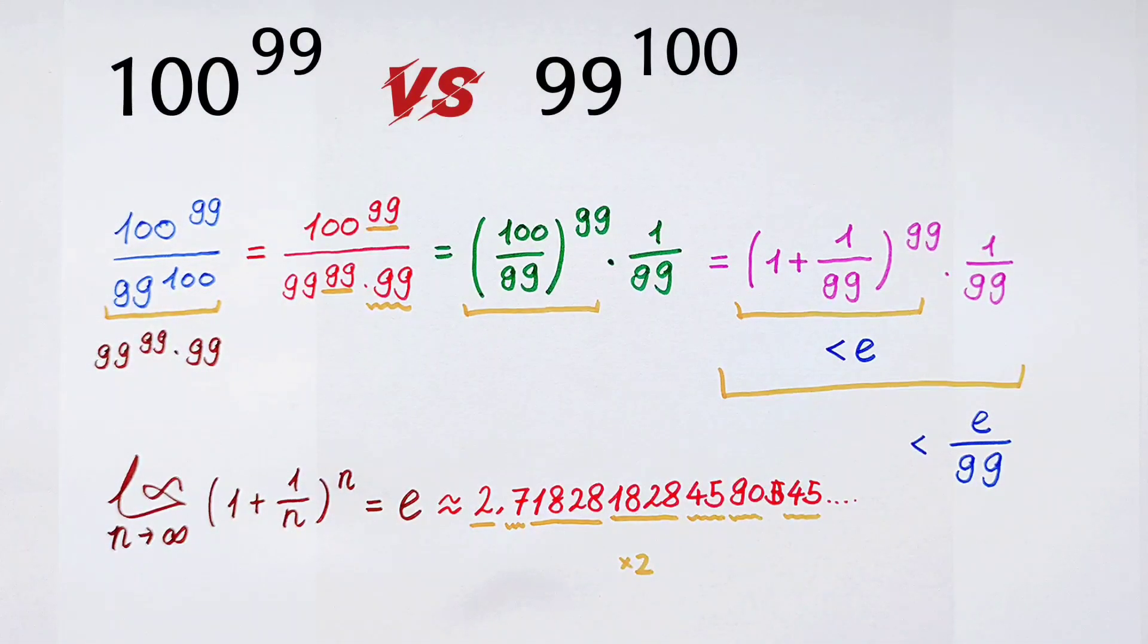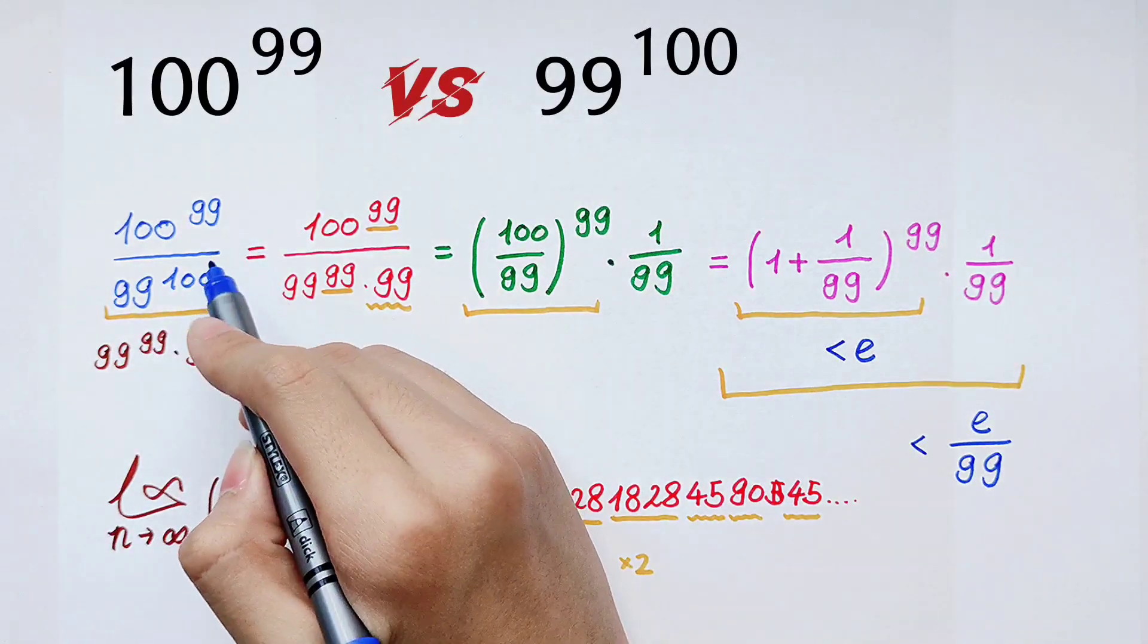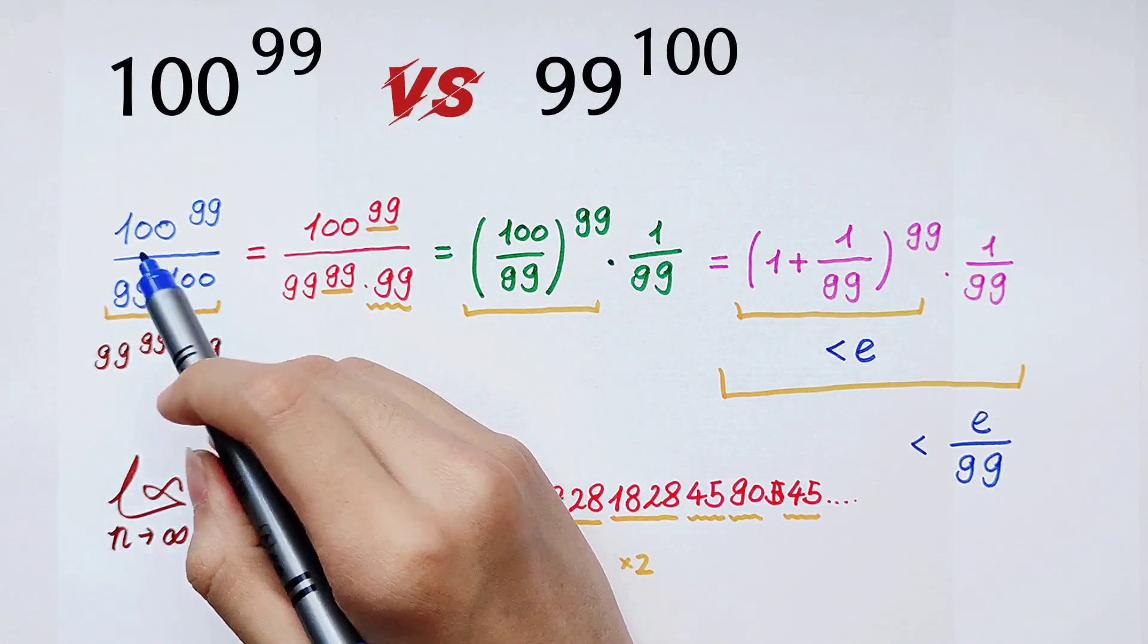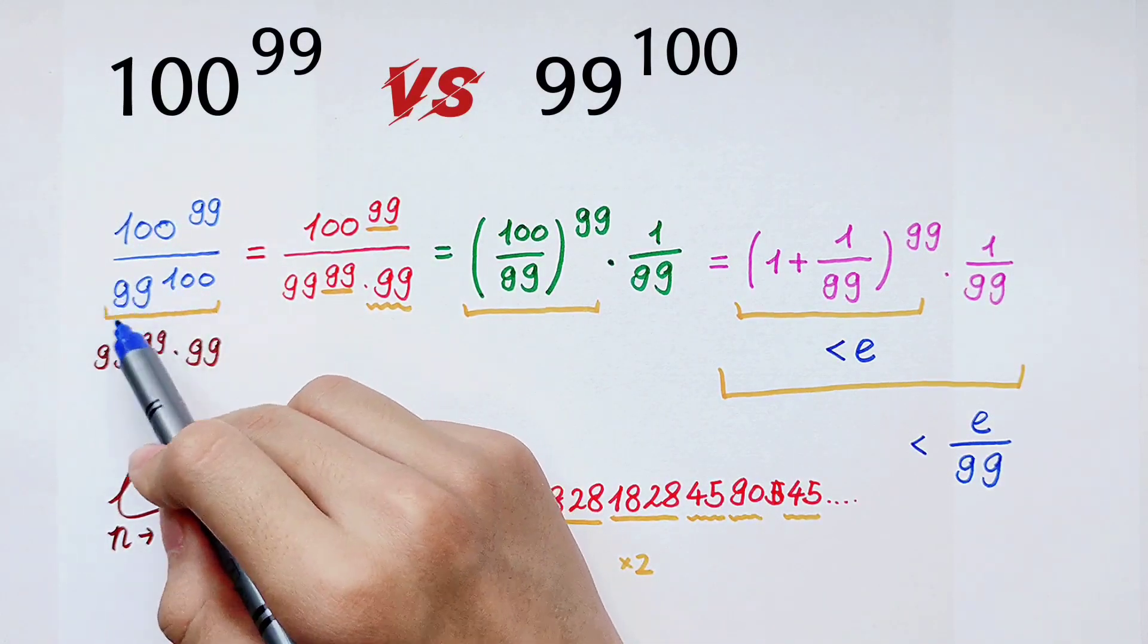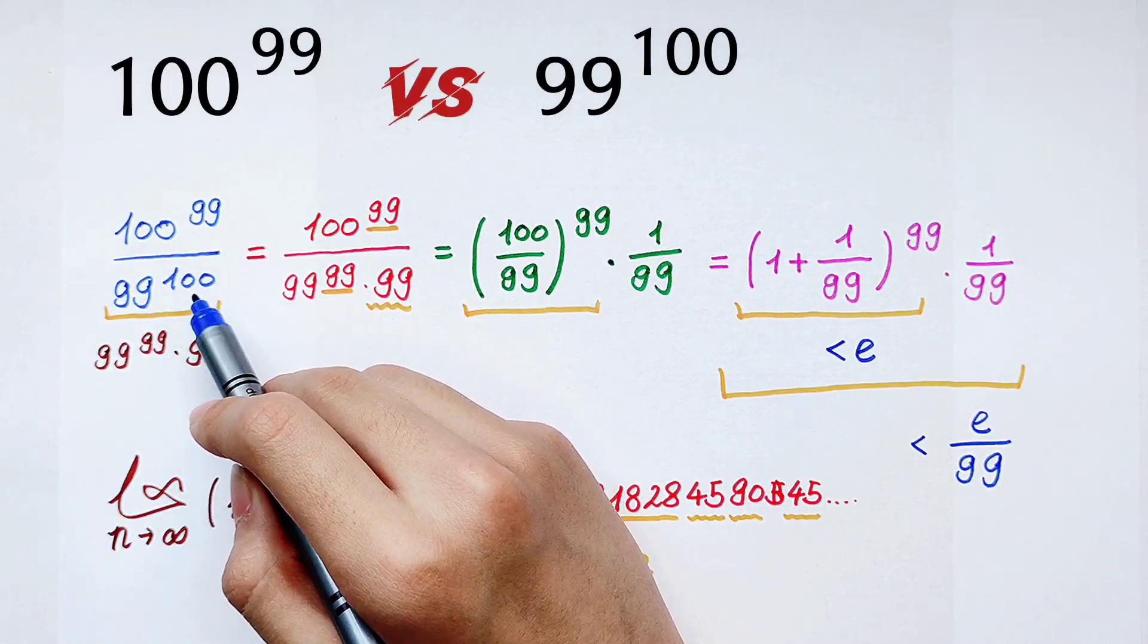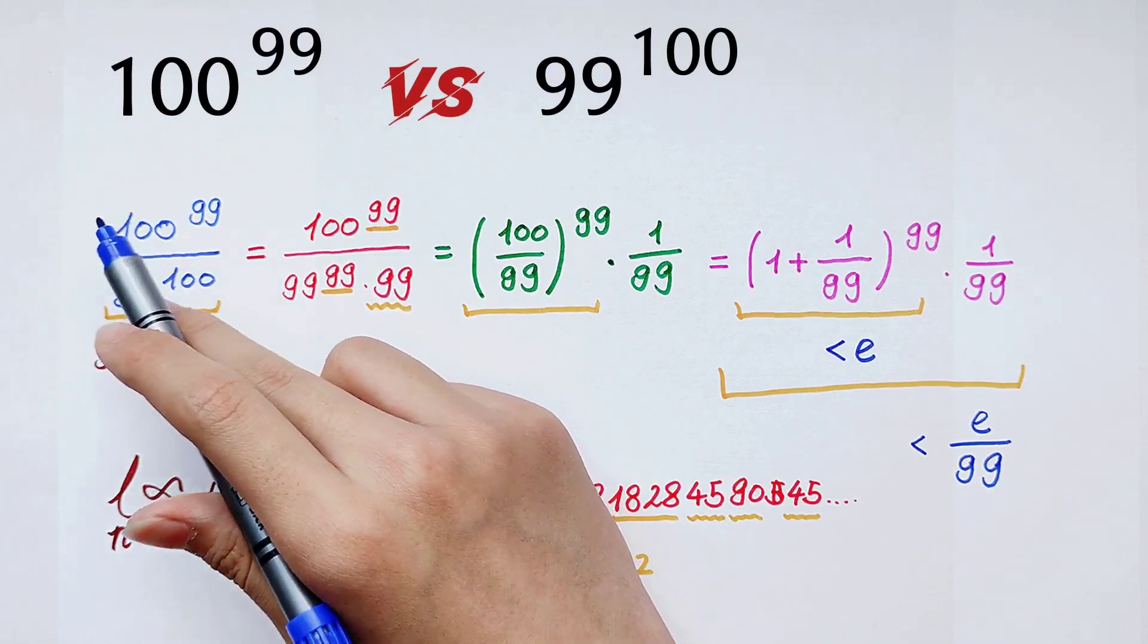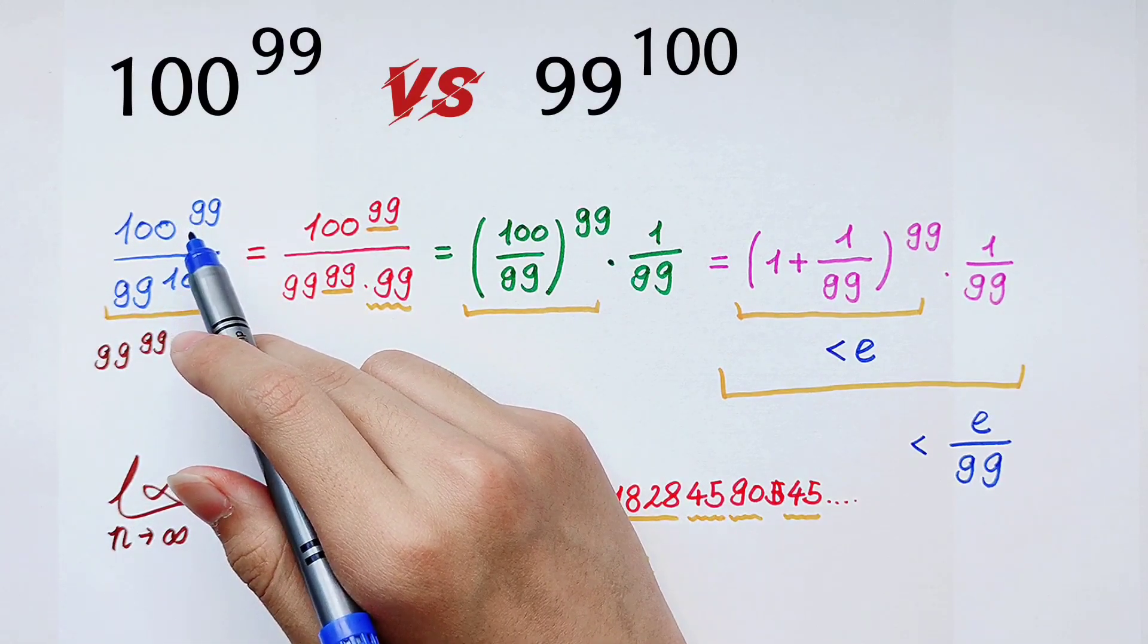Because we divided 100^99 by 99^100, if it is bigger than 1, then the numerator is bigger than the denominator. If it equals 1, then the numerator equals the denominator. And when this fraction is smaller than 1, then the denominator is bigger than the numerator.